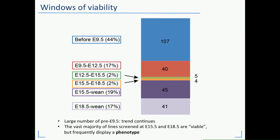Going through this tiered process allows us to establish windows of lethality for each gene. One of the most interesting outcomes is that a large proportion of genes analyzed thus far are actually lethal prior to E9.5 — meaning there's no active heartbeat in a homozygous embryo, or no homozygous embryos are identified at all. On the other end, a large percentage are also lethal after the latest time point examined, E15.5 or E18.5 — many predicted to be in the perinatal period. Importantly, phenotype is not the same thing as lethal, and we have to distinguish these two.